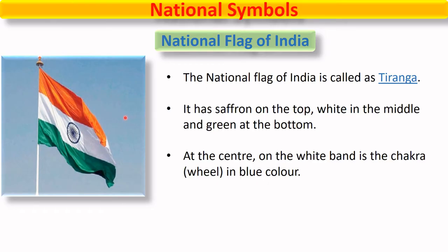The first national symbol is our national flag. The national flag of India is called the Tiranga. It has saffron color on the top, white in the middle, and green at the bottom. At the center on the white band is the Ashoka Chakra wheel, which is blue in color.